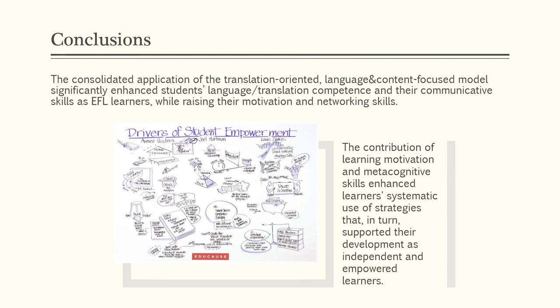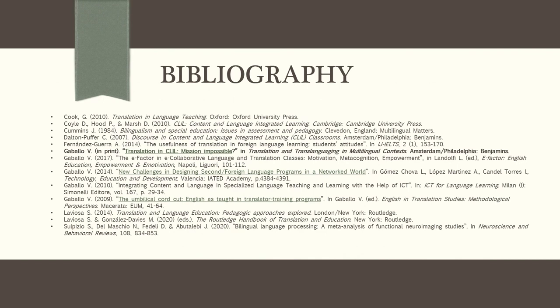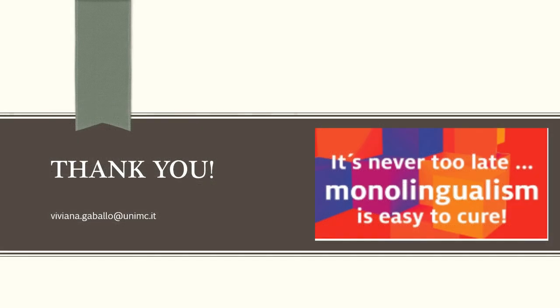To sum up, the consolidated application of the translation-oriented language and content-focused model significantly enhanced students' language and translation competence and their communicative skills as English foreign language learners, while raising their motivation and networking skills. The contribution of learning motivation and metacognitive skills enhanced learners' systematic use of strategies that, in turn, supported their development as independent and empowered learners. Here is a small bibliography with some links to the resources used in this presentation.